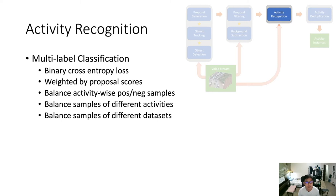After filtering, we still have cube proposals, and now comes the activity recognition part. Since we have nicely defined the proposal generation, activity recognition is simply a classification problem. It's a multi-label classification since there could be multiple types of activities occurring at the same time on each object, so we use binary cross-entropy loss. During training, the loss is weighted by proposal scores because proposals may not perfectly align with activity instances. Since the dataset is relatively long-tail, we need activity-wise positive and negative sample balancing, and also balance samples across different activities and across datasets.